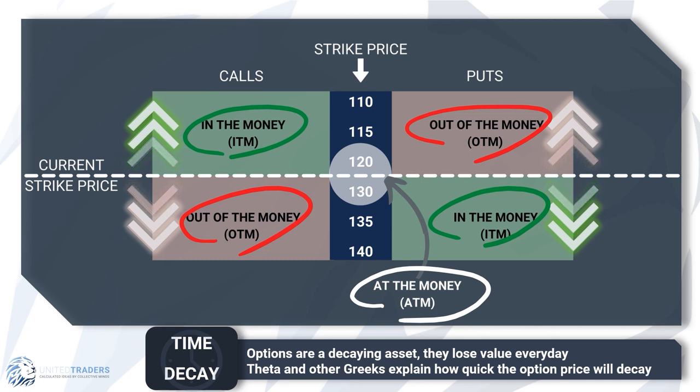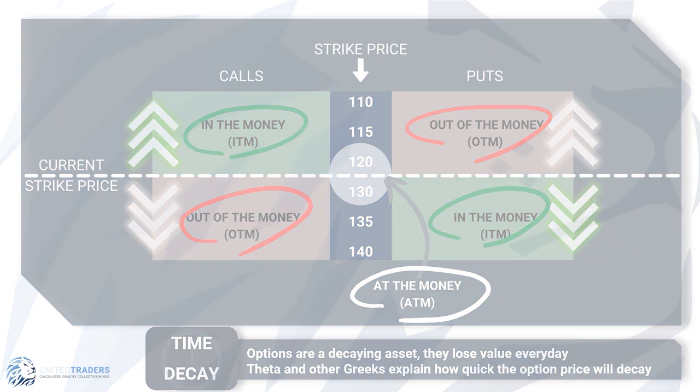At the money options can be exercised but normally expire worthless. Options are a decaying asset — they lose value every day. Theta and other Greeks explain how quickly the option's price will decay.